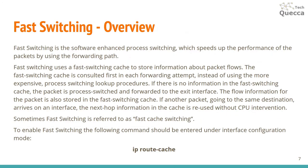Fast switching is the software-enhanced process switching, which speeds up performance by using a forwarding cache. The fast switching cache stores information about packet flows and is consulted first in each forwarding attempt instead of using the more expensive process switching lookup. If there is no entry in the fast switching cache, the packet is process-switched and the flow information is stored in the cache. If another packet going to the same destination arrives, the next-hop information in the cache is reused without CPU intervention. Fast switching is sometimes referred to as fast cache switching. To enable it, use 'ip route-cache' under interface configuration mode.